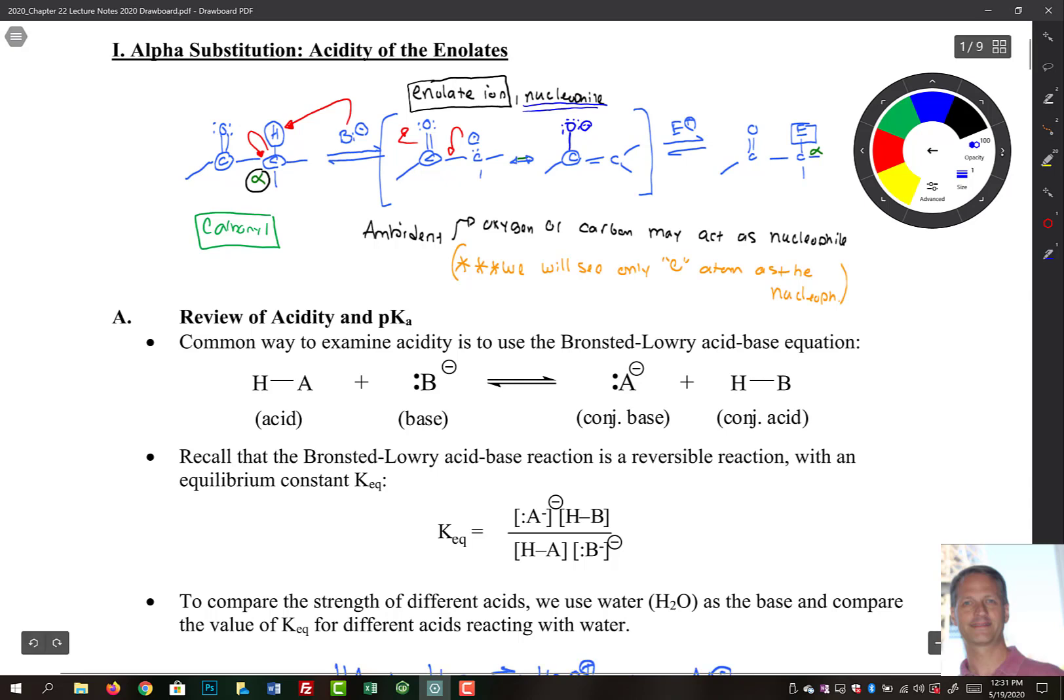So both this carbon atom here and this oxygen have the potential to be nucleophiles. Usually in the sophomore level organic you typically see only the carbon atom as the nucleophile here. The next step of this reaction is that there's some electrophile that's being added, and then you would have your carbon, the one that we have here, acting as your nucleophile and bonding to that electrophile at your alpha position. So we call that alpha substitution.